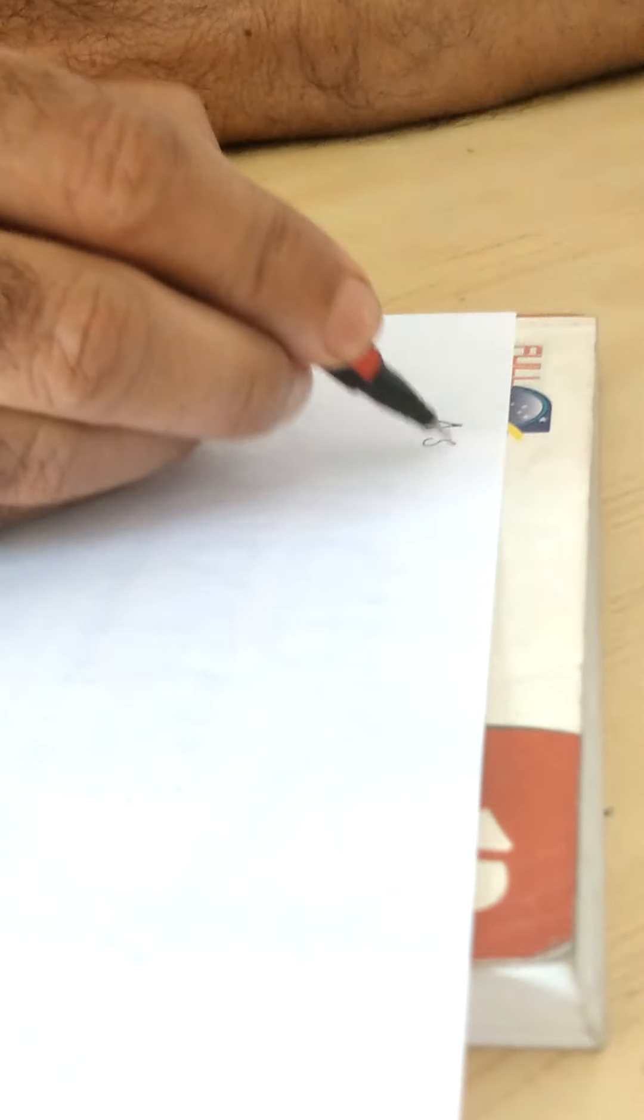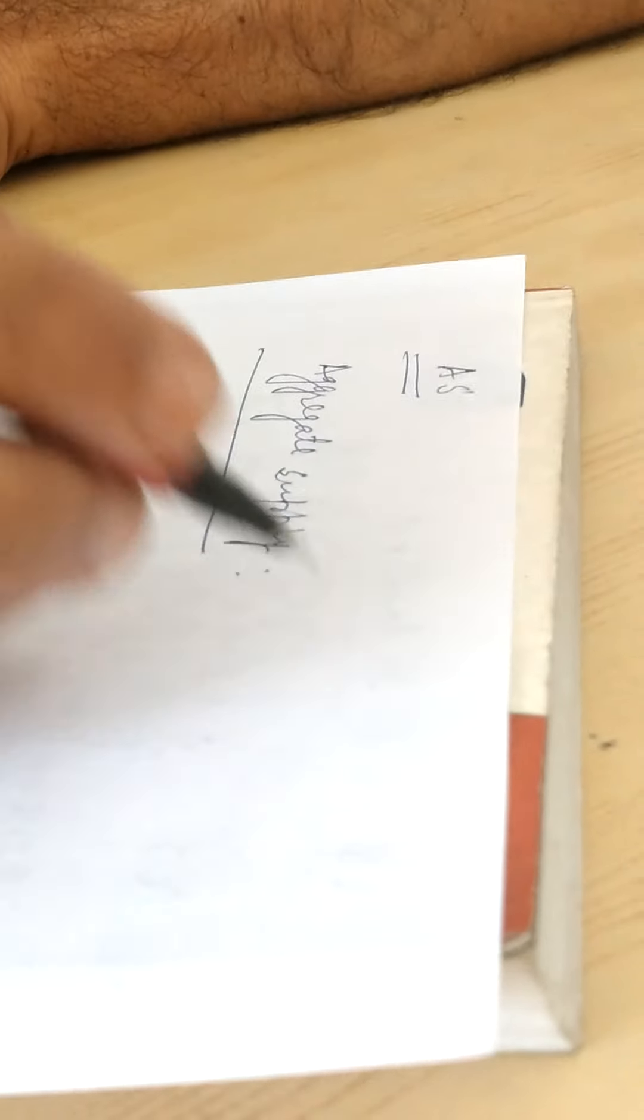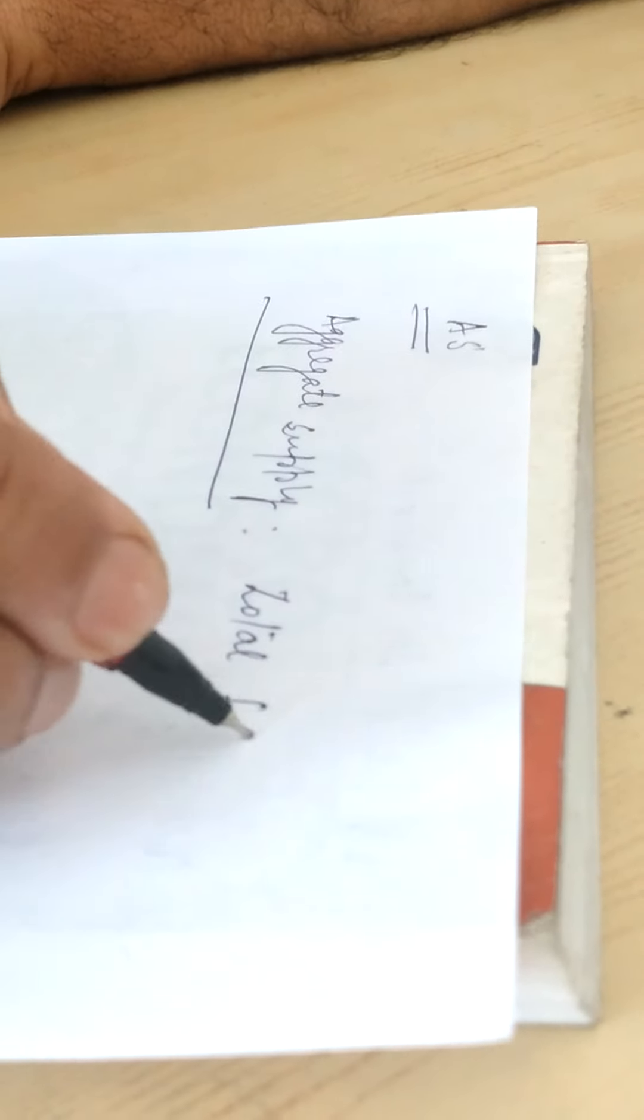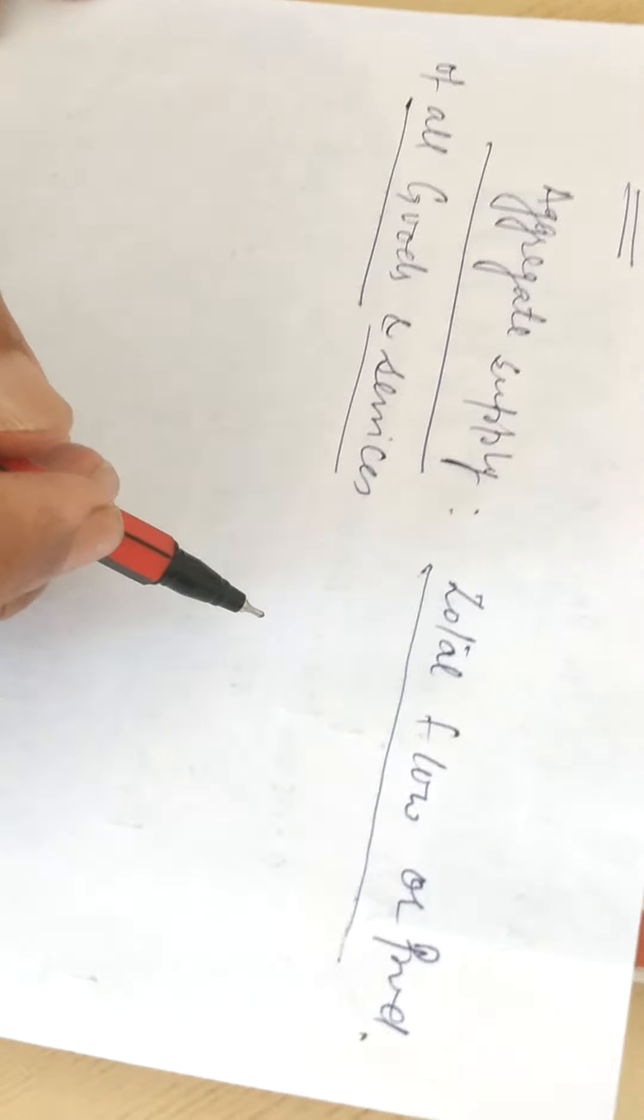Now another concept of aggregate demand is aggregate supply. Now I am discussing with you the concept of aggregate supply. Aggregate supply means total flow of goods and services in an economy in an accounting year. Aggregate supply refers to total flow or production of all goods and services in an economy in an accounting year.